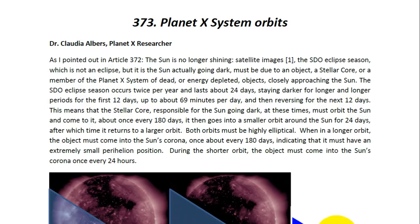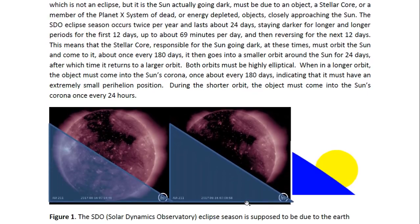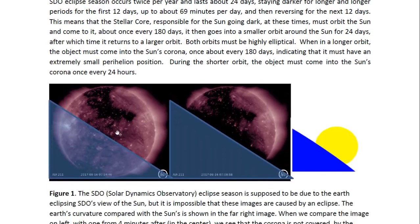During the short orbit, the object must come into the sun's corona once every 24 hours. These are the images I show to explain why the STO eclipse season is not caused by an eclipse.